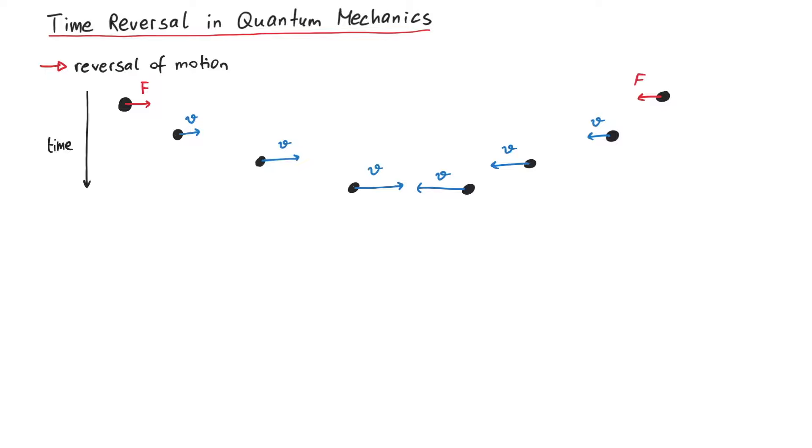If this process is symmetric under time reversal, then the same process going back in time should also be possible, or in other words, should be a valid solution to the equations of motion. But, if we start with two objects really close together, and they are still attracted by the same force, they will just collide instantly, won't they?